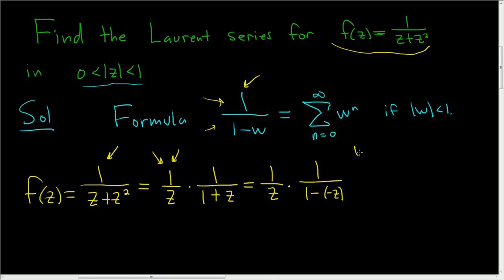Negative and negative is positive, and now we can use the formula. Our w here is -z. We know that the modulus of w, which is the modulus of -z, is the modulus of z, and that's less than 1.